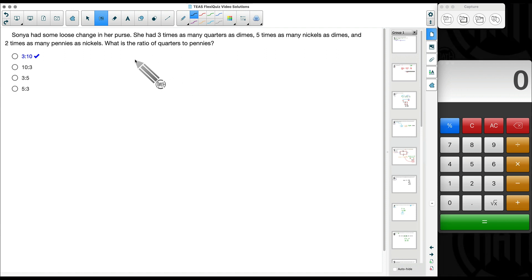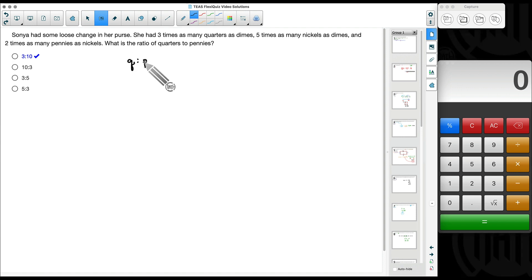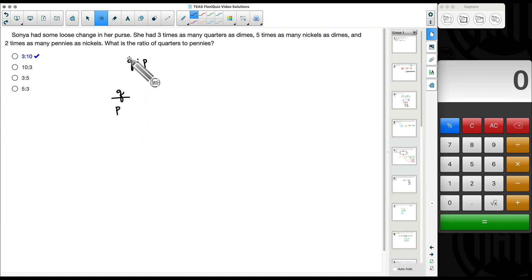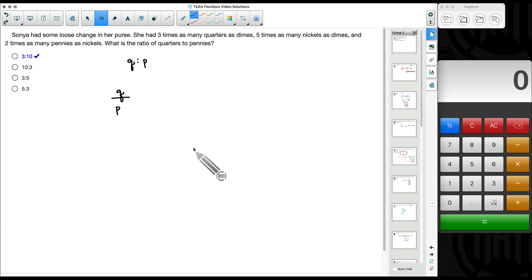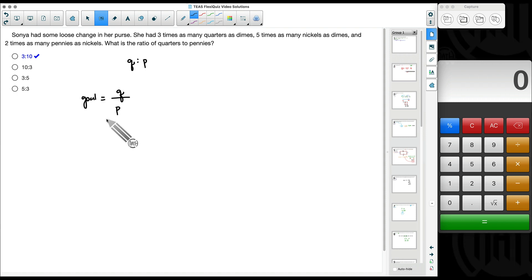Quarters to pennies. The ratio. Now one way we can look at it is quarters to pennies, or let's think about it as a fraction, quarters over pennies. Two different ways of saying the same thing. Order is important. So this is our goal right here.